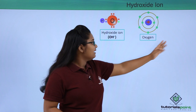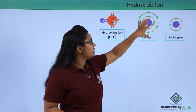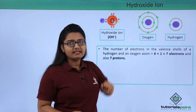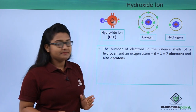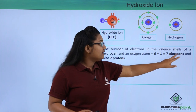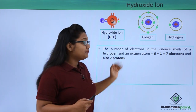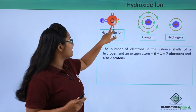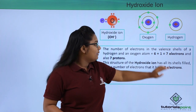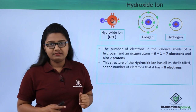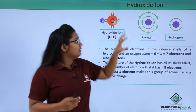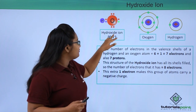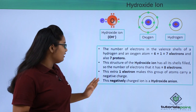Let us look more closely at the hydroxide ion, composed of one oxygen and one hydrogen atom. Oxygen has six valence electrons and hydrogen has one, giving a total of seven valence electrons — and since these two atoms are neutral, there are also seven protons. When they come together and gain one electron to form the hydroxide ion, the electron count becomes eight. This one extra electron gives the structure a charge of minus one, making it a negatively charged anion — the hydroxide anion.